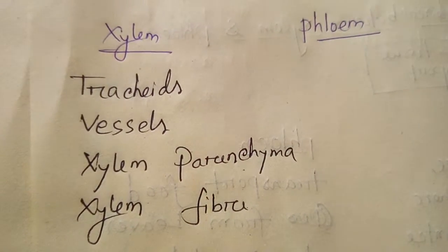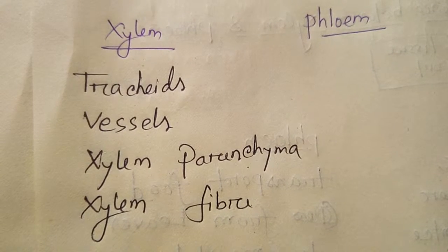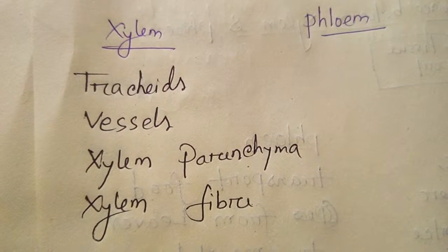And phloem consists of sieve cells, companion cells, phloem parenchyma, and phloem fiber.